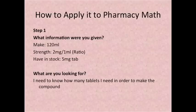Step 1. What information were you given? You need to make 120 ml. The strength which is a ratio is 2 milligrams per 1 ml and you have in stock 5 milligram tablets. What are you looking for? Well we need to know how many tablets we need in order to make the compound.